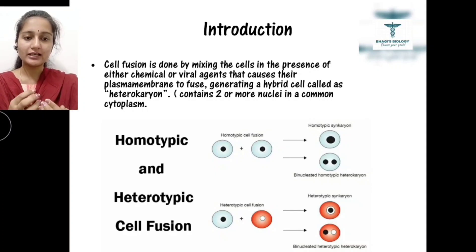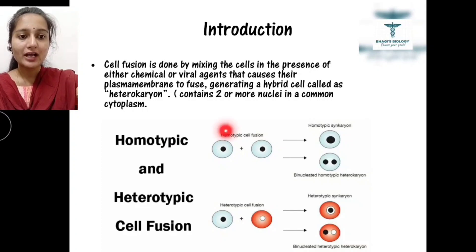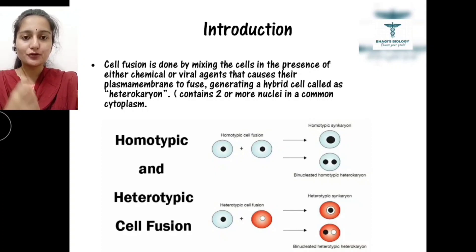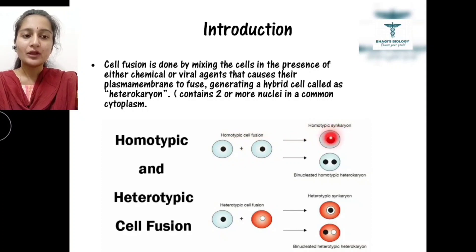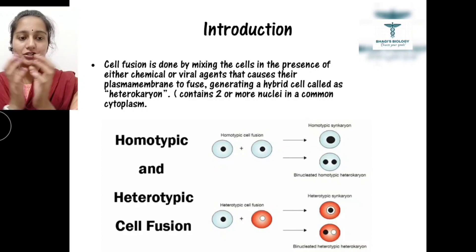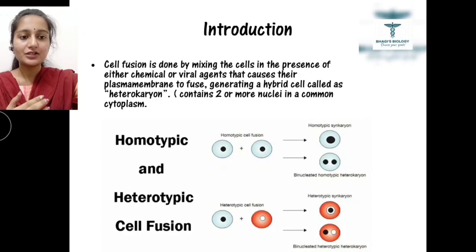There are two types of cell fusion: homotypic cell fusion and heterotypic cell fusion. Homotypic means the same type of cells. As you look at the diagram, the same type of cells are taken and when fused in the presence of a chemical or viral agent, their plasma membranes fuse. The nuclei of the two cells fuse together, and the product is called a homotypic synkaryon — synkaryon means the two nuclei of the same type fuse to form a single nucleus.